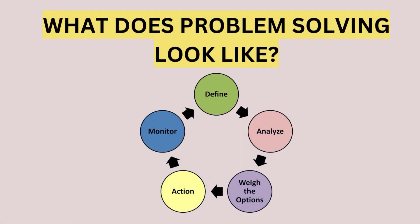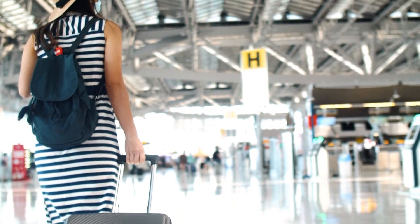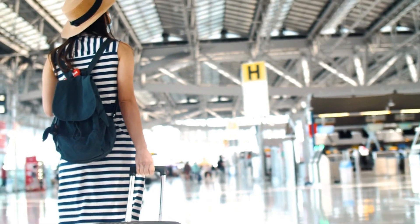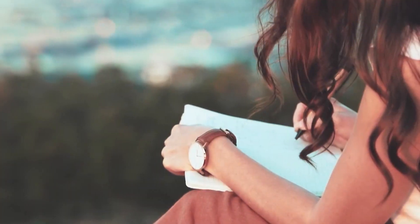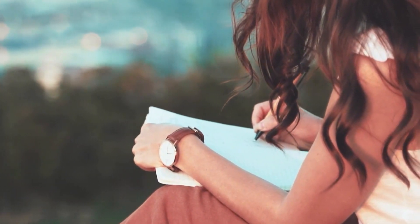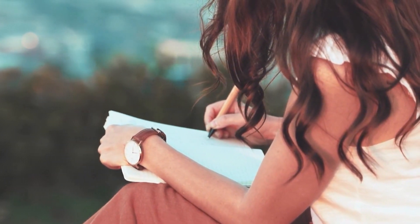What does problem solving look like? If you see this figure, you find that there are some steps in problem solving: first defining it, then analyzing it, weighing the options, coming to action, and the last part is monitoring. Suppose I want to travel to a place called Astana in Tajikistan. When I want to travel to this place, this is my problem — how to travel. Defining means: what is my problem?